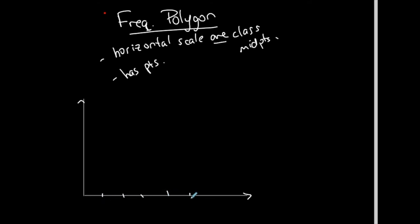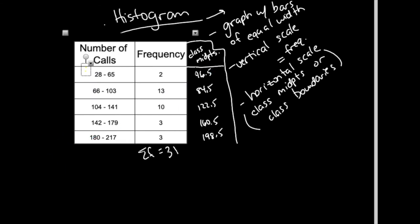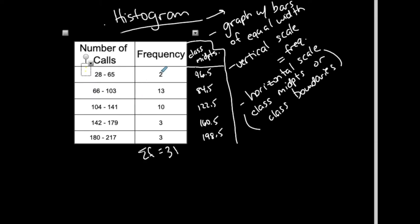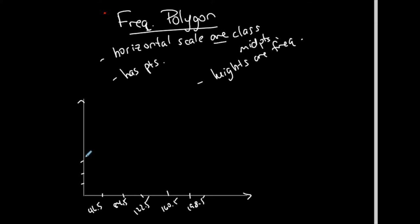So one, two, three, four, five class midpoints: 46, 84, 122, 160, 198 - my class midpoints. And again, the heights are frequencies, very similar to a histogram. I got to be at least a 2 and at most a 13. So I think I'll count by 2s: 2, 4, 6, 8, 10, 12, 14 frequencies.